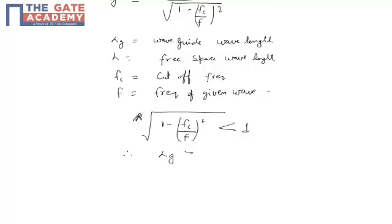So from this, what I can conclude is that my option B is telling greater than free space wavelength, means lambda_g is always greater than lambda. Waveguide wavelength is always greater than free space wavelength, so my option B is satisfying.